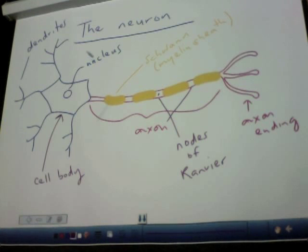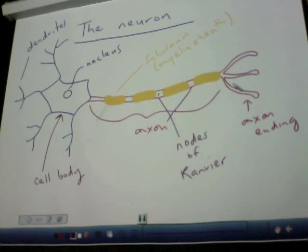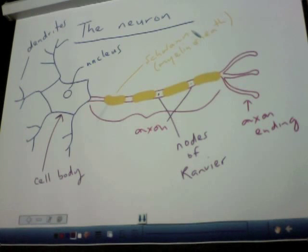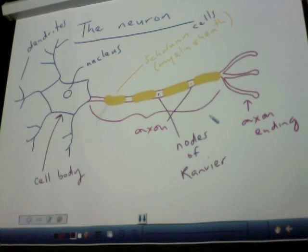So to recap: the nucleus, the dendrites, the cell body, the axon — which is the long tail — the nodes of Ranvier, the axon ending, and the Schwann cells. And that's the neuron — the basic cell of the nervous system.